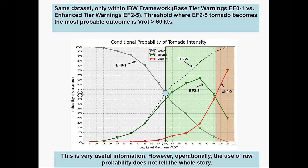Using the raw unfiltered full sample of data, you can calculate in probabilistic terms the most likely EF scale outcome for a given rotational velocity — again, conditional on tornado occurrence. The raw probabilities are dominated by EF zeros on the low end of the V-ROT scale and by large tornadoes on the high end. For example, with a rotational velocity of 65 knots, the most probable outcome is EF two, but the raw probability at that point is only about 35 percent, so it's not that useful in the middle ranges.